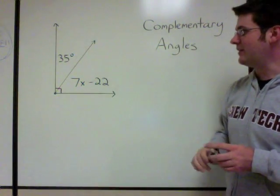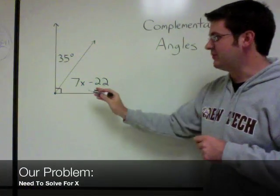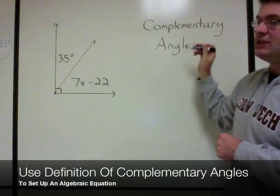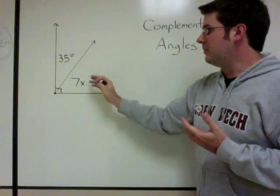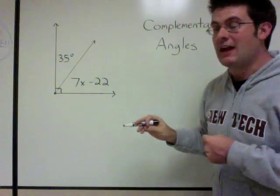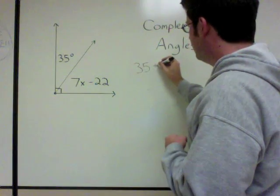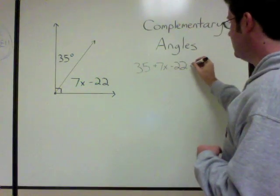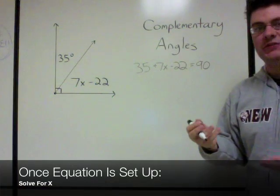Our problem is to solve for x, so we'll use the fact that these are complementary angles to set up an equation: 35 plus 7x minus 22 equals 90.